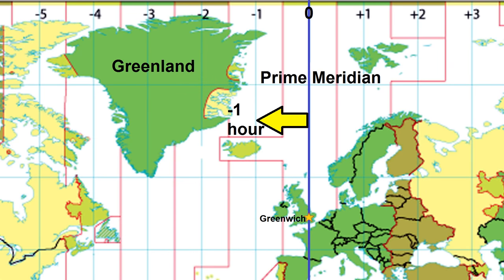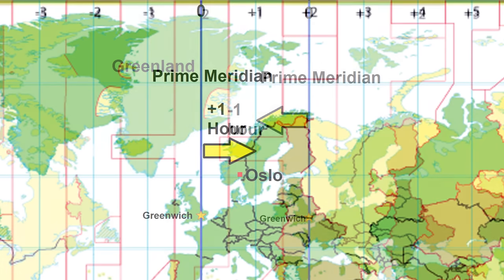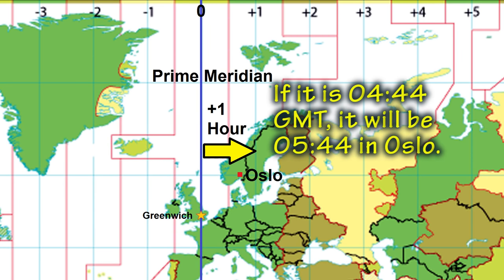Second, count how many time zones away from Greenwich the location is. For example, Greenland is one time zone to the west of Greenwich, so subtract one hour from GMT to determine the time there. Oslo in Norway is one time zone to the east of Greenwich, so add just one hour to the current Greenwich Mean Time.